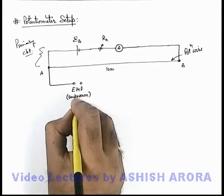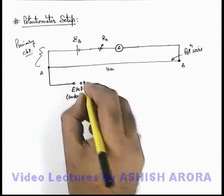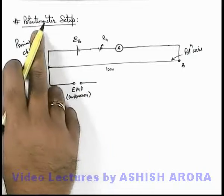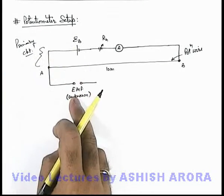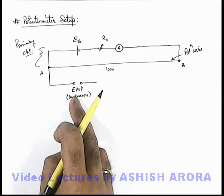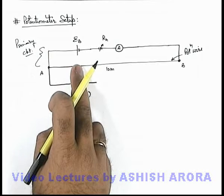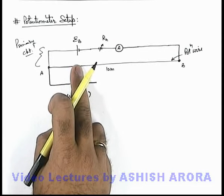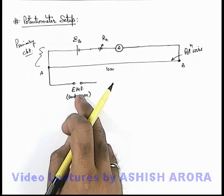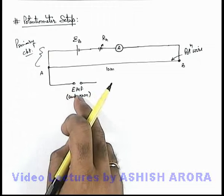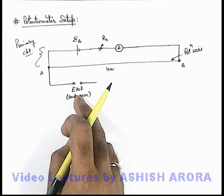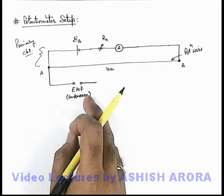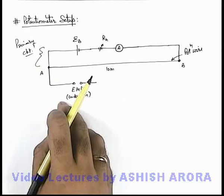Here another advantage which you just keep in mind, that by using a potentiometer setup we can also measure EMFs because at the time of measurement it does not draw any current. Whereas using a voltmeter you can never measure any EMF because EMF is the open circuit potential difference, and whenever you connect a voltmeter across an EMF it draws some current.